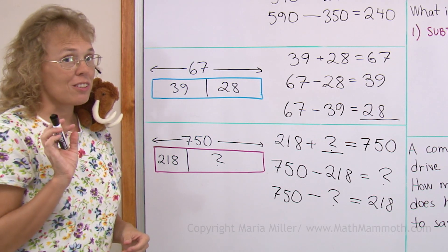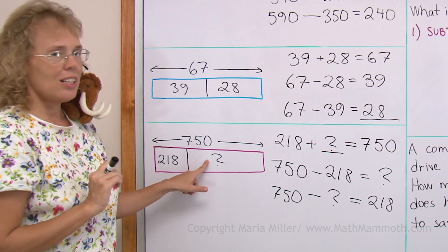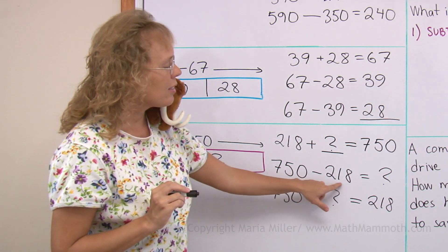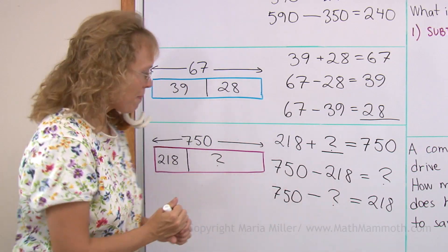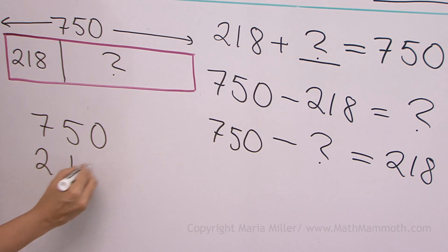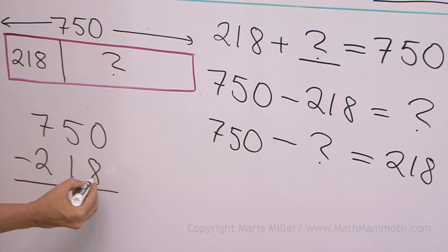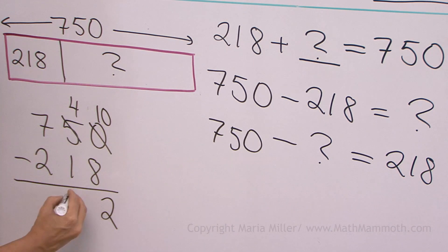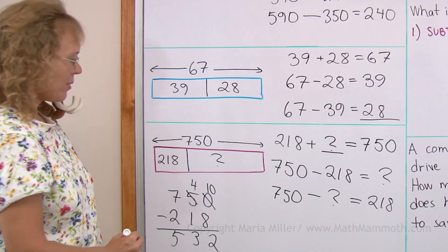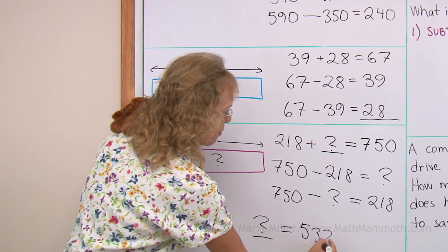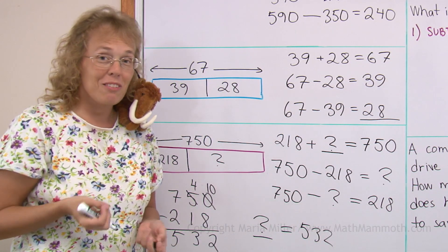If I want to solve the unknown, if I want to find out what this question mark stands for, then I would take this here. I would subtract. Let's do that: 750 minus 218. Over here, 0 minus 8, need to regroup. And then we get 2 and 3 and 5. So this unknown here is 532. So we just did a little bit of algebra and equations.